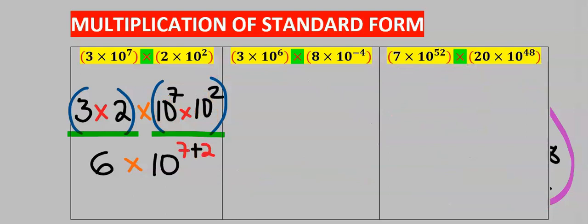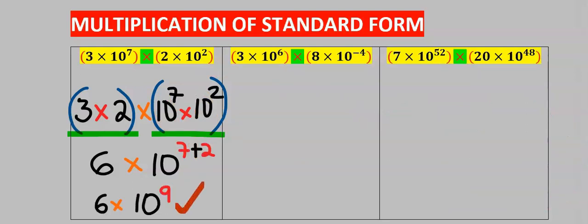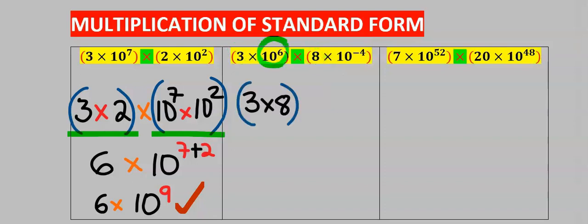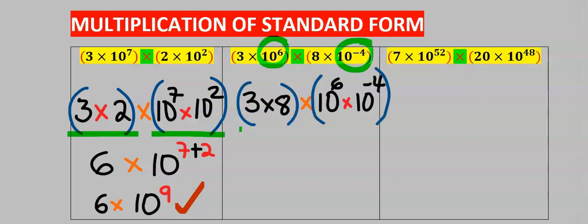Simplifying this further gives our answer. Next, let's consider this multiplication of standard form. Step one: three multiplies. Then the tens multiply. Three times eight gives you 24.